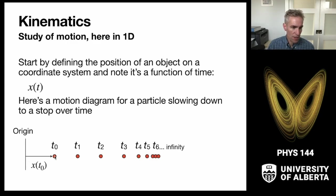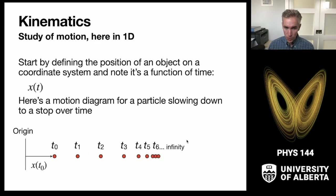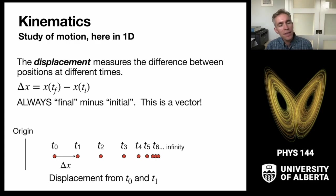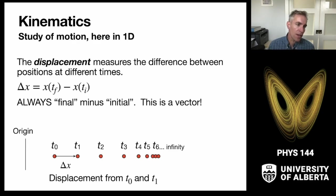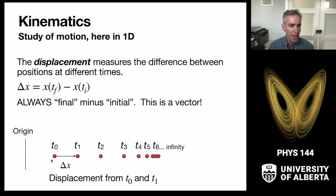We define position as the location of a particle relative to the origin, often indicating t=0 as the first time and going on to infinity. The displacement of a particle is the measurement of differences in positions measured relative to the origin at different times. We always construct our vectors as final minus initial. This diagram shows the displacement from t0 to t1: the position of the final minus the position of the initial. The vector connects the two positions — adding it to the initial gives the final.